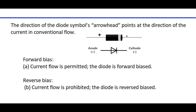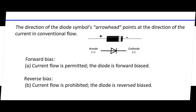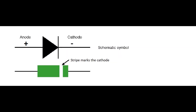When a diode is forward biased, the current is permitted to flow through. When it is reverse biased, the current is prohibited from flowing through the diode. Note that the strip on the diode marks the cathode side of the diode.